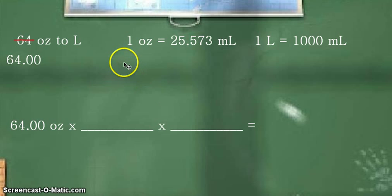And there we have our equivalent statements, which are: 1 ounce is approximately equal to 25.573 milliliters, which is in the unit mL, and obviously, the more familiar 1 liter is approximately equal to 1,000 milliliters.